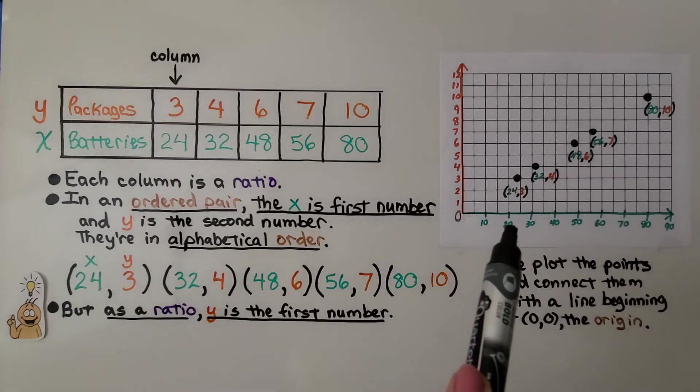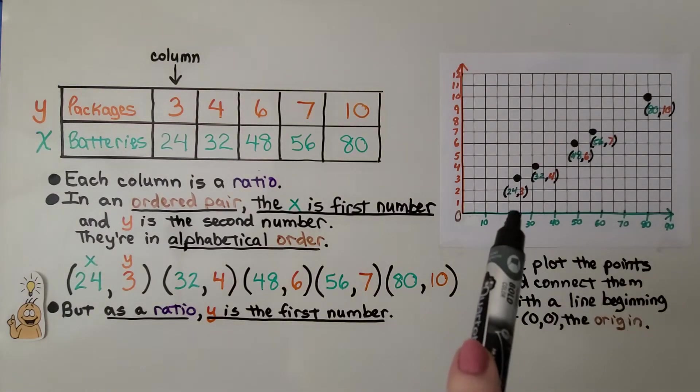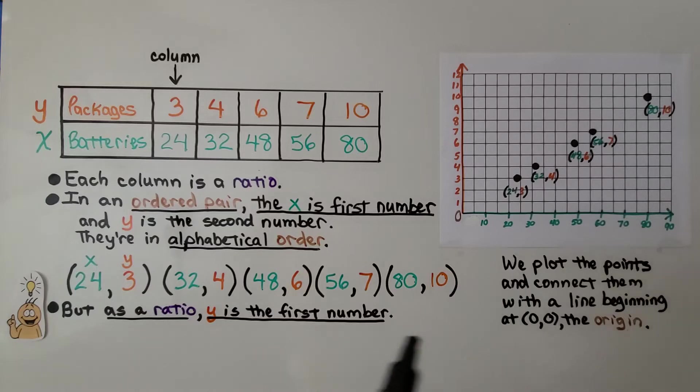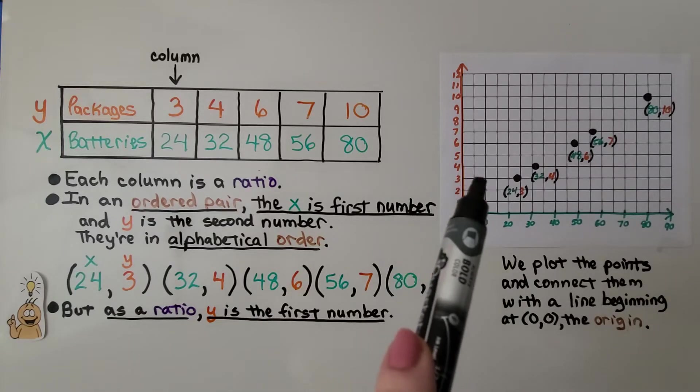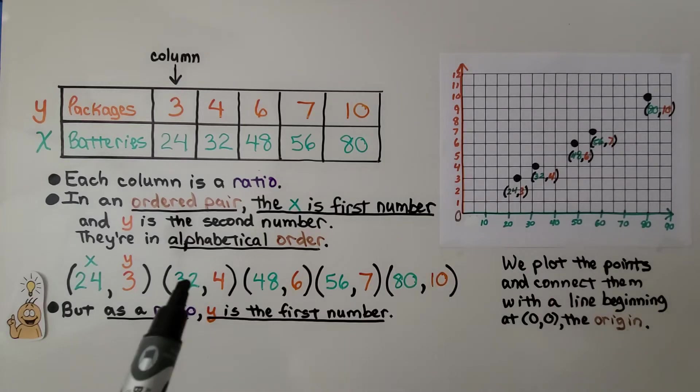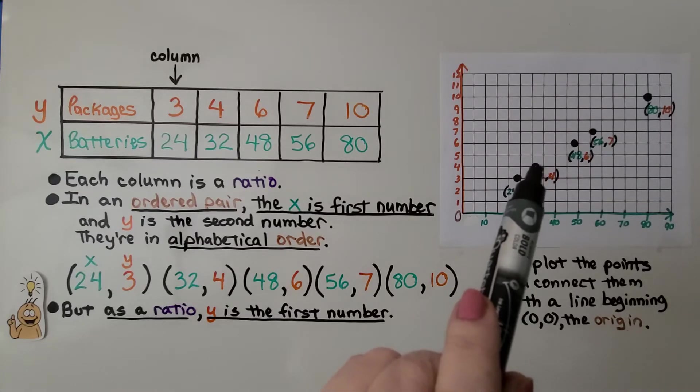And if you look at our scale, it goes from 20 to 30, so this middle line must be 25, right? So it's going to be just before the 25. And then for 3, we've got it right there. So it meets at 24, 3. For the next one, it's going to meet at 32, 4. So we go a little past 30 to 32, and then there's 4. We plot our point right there.